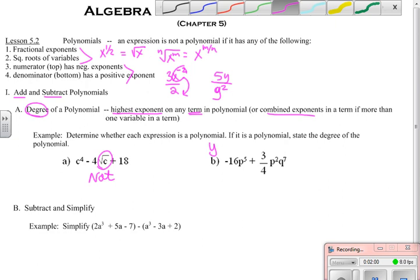This one is a polynomial, but when I go to look at a degree, the degree of this term is 5, the degree of this term is 2 plus 7. So the degree of the polynomial is that combined exponent value, which is 9. And it's just another way to talk about our polynomials.